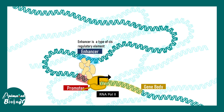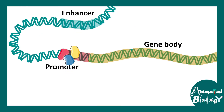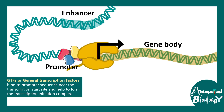There is a middleman which coordinates between the promoter, enhancer, and RNA Pol 2 mediated transcription. These middlemen are known as mediator complexes — they link the enhancer to the promoter. At the promoter, there are a set of transcription factors which are recruited, known as the generalized transcription factors.